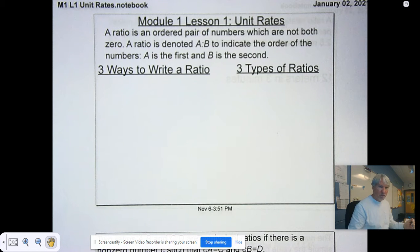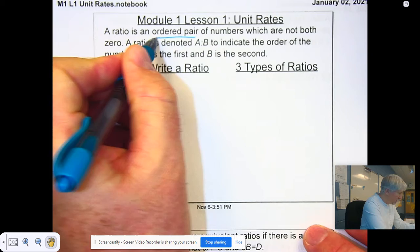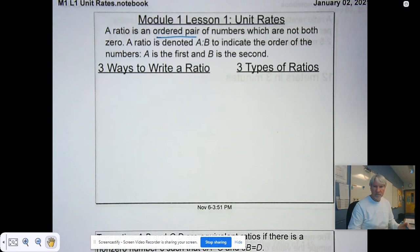A ratio is an ordered pair of numbers. The ordered pair of things tells you two things: there are two numbers, and first and second matter. The order matters. Both of these numbers cannot be zero, so you can't have zero, zero. Your ratio, A to B, indicates the order of the numbers. A is first, B is second.